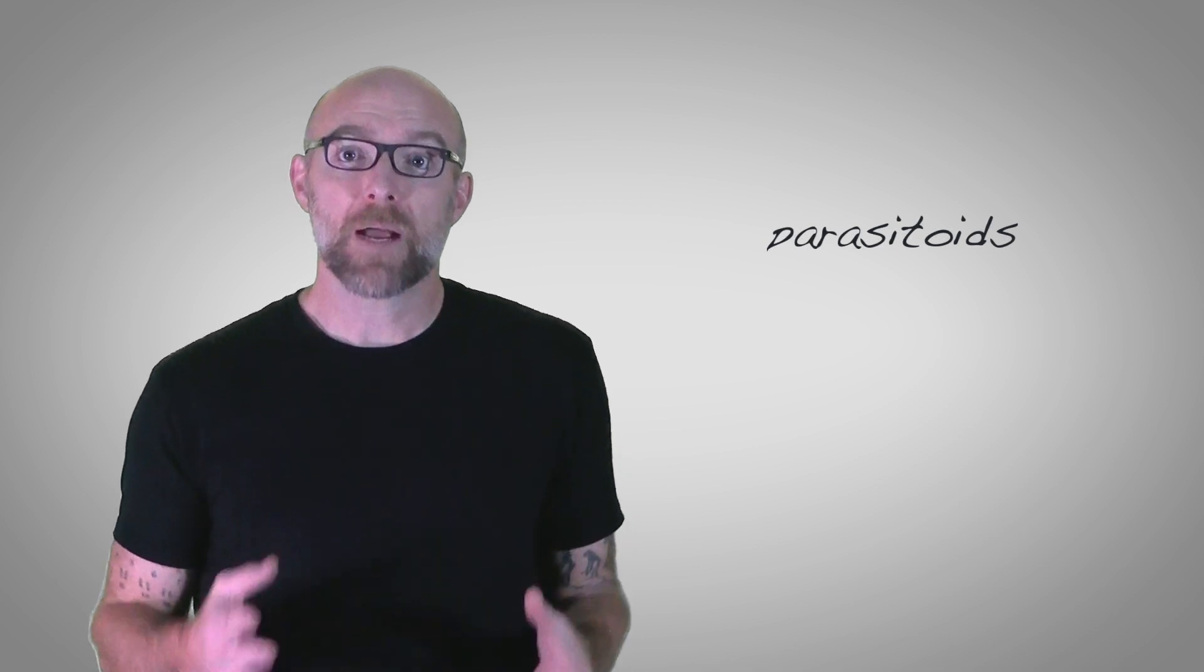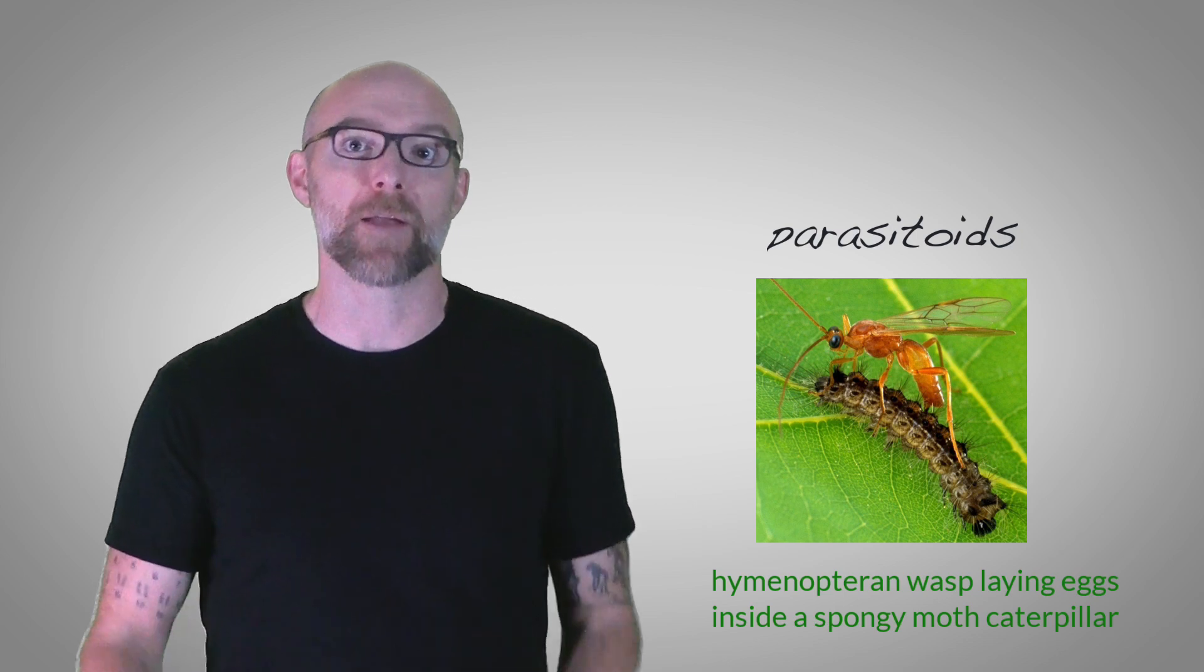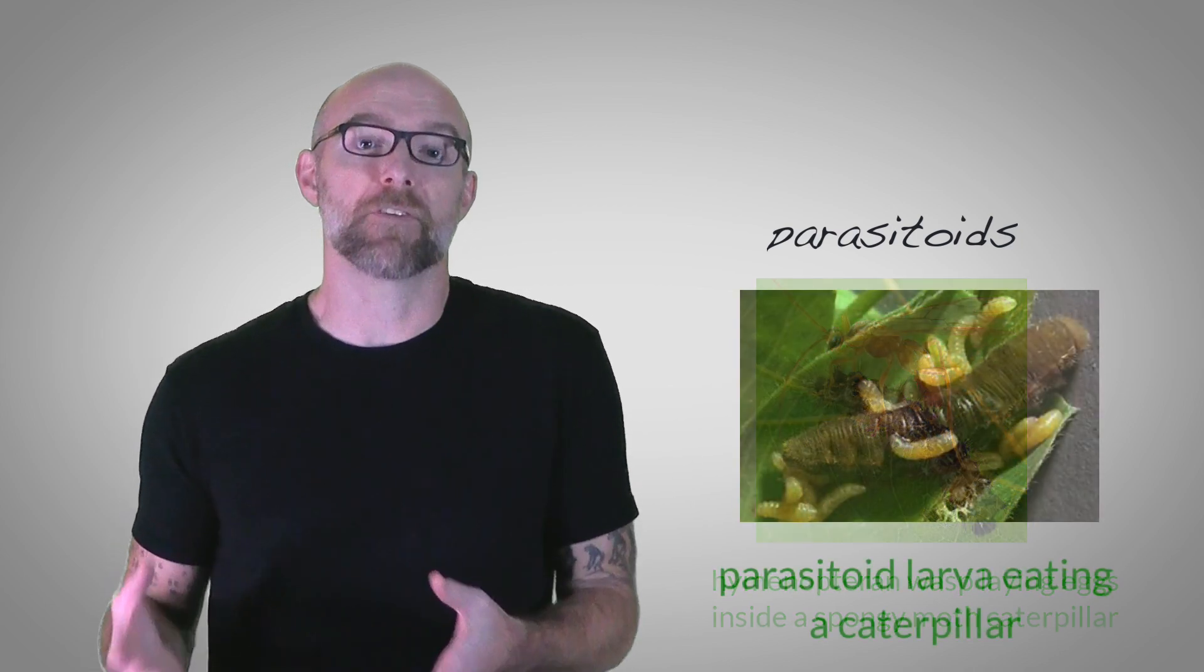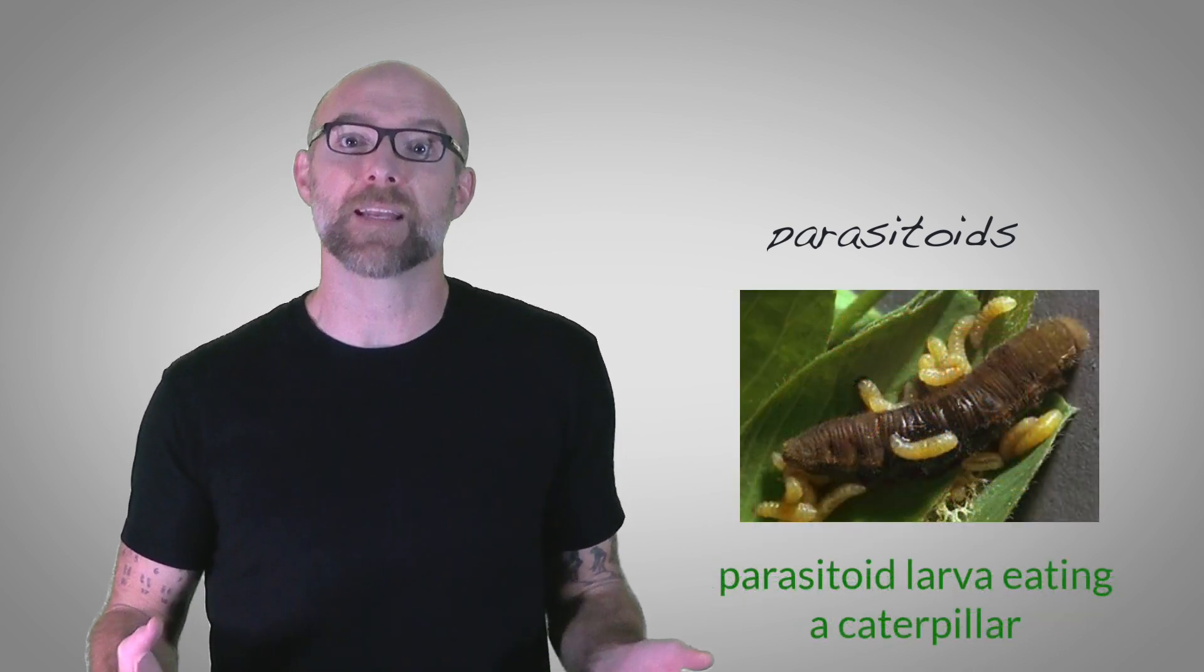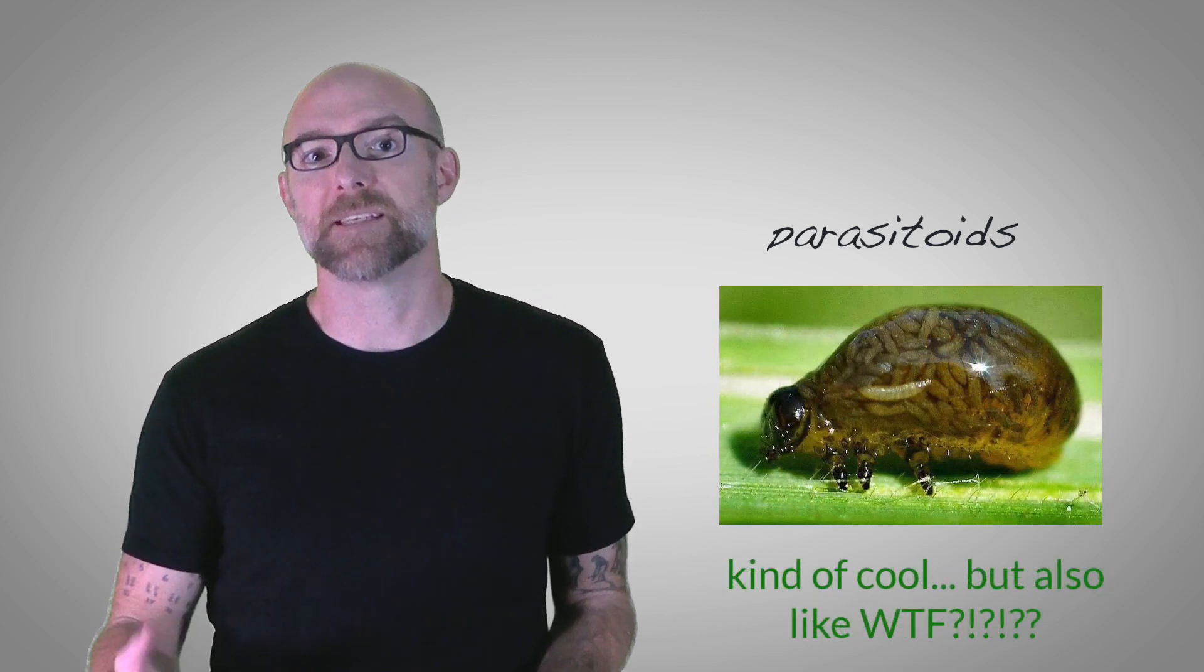I should say, before we dive in, that the Nicholson-Bailey model was actually derived with a specific type of predation in mind, parasitoids. Parasitoids lay their eggs inside or on a host organism, which we could also call their prey. When the eggs hatch, the larva feed on the host, often consuming it entirely during the course of their development and ultimately leading to the host's death.